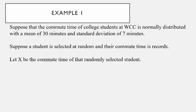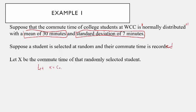Suppose that the commute time of college students at WCC is normally distributed, with a mean of 30 minutes and a standard deviation of 7 minutes. Suppose a student is selected at random and their commute time is recorded. We're going to let X be the commute time of that randomly selected student.